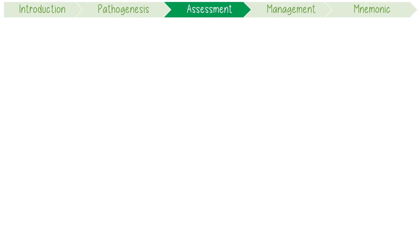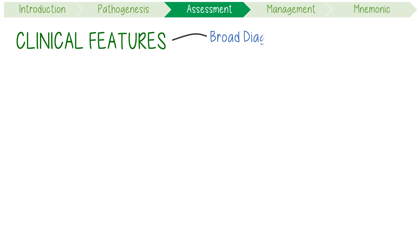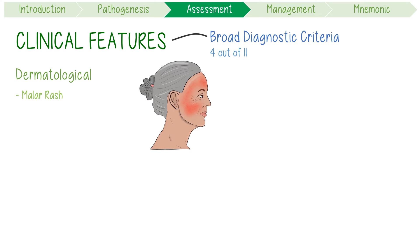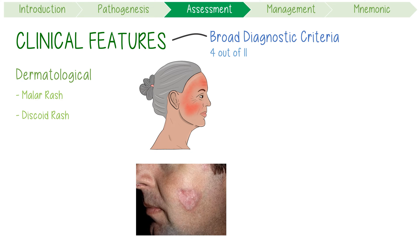Lupus can cause a huge number of clinical features, reflected in its broad diagnostic criteria. A diagnosis can be made if 4 out of 11 criteria are met. There are three dermatological features: a malar rash, which is an erythematous lesion spanning across the bridge of the nose and the cheeks; a discoid rash, which are dry patches that evolve to form red plaques; and photosensitivity.